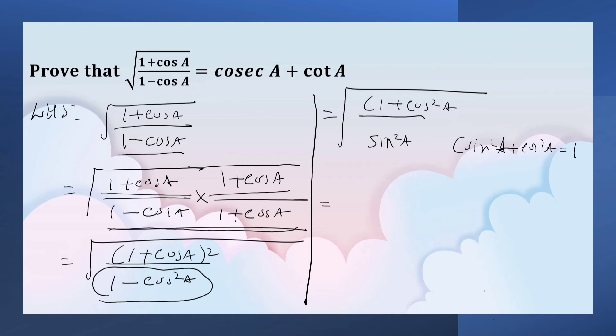We can write it in this form. Sin square a can be written as sin a the whole square. Now we can put the whole thing in the square form. That is equal to 1 plus cos a upon sin a the whole square.